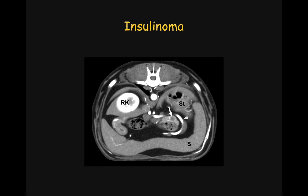Insulinomas can be challenging to detect on ultrasound. In this dog, the lesion was not identified on ultrasound and a contrast CT was performed. On the contrast study, we can outline a small hypoattenuating nodule within the pancreas representing the insulinoma, confirmed at surgery. Nearby we see the splenic artery, the spleen, the stomach, the right kidney, the duodenum, and the colon. This technique should be kept in mind as it is far more sensitive to detect small lesions within the pancreas.